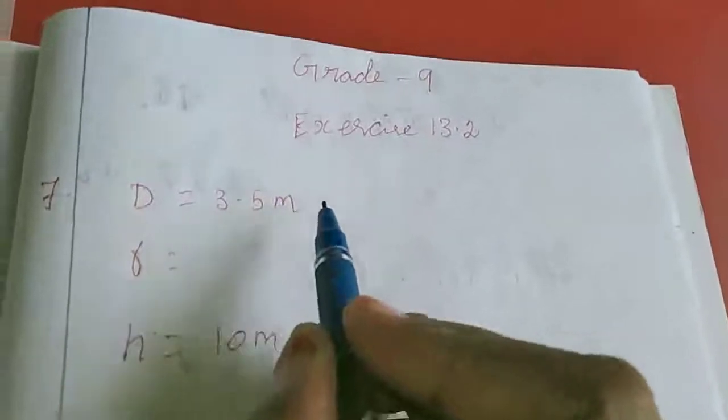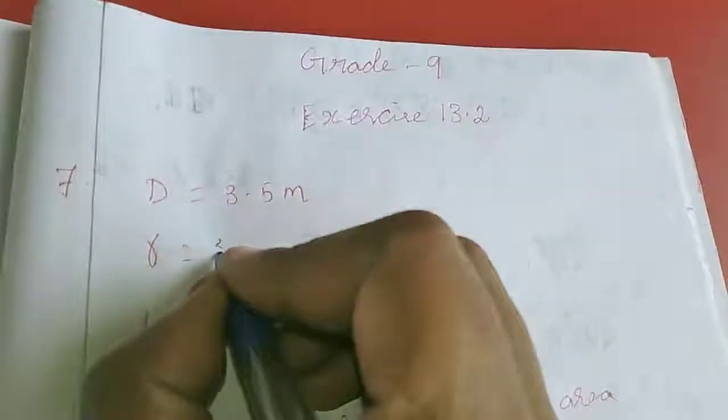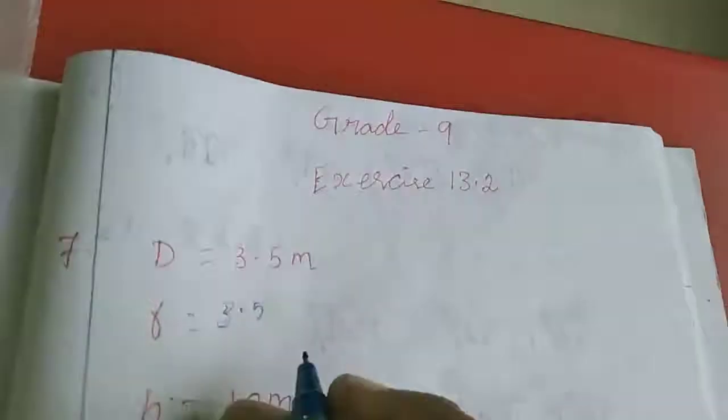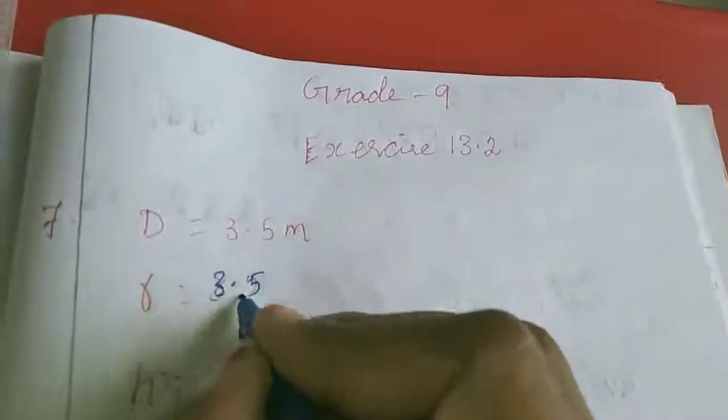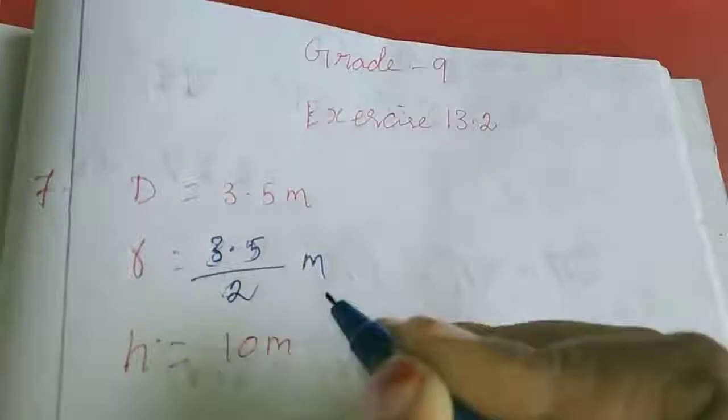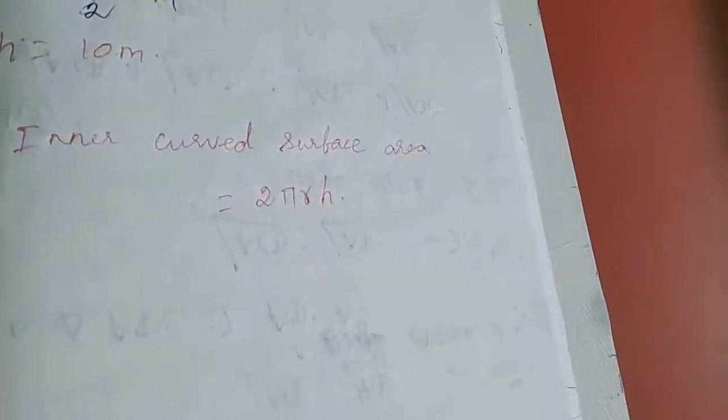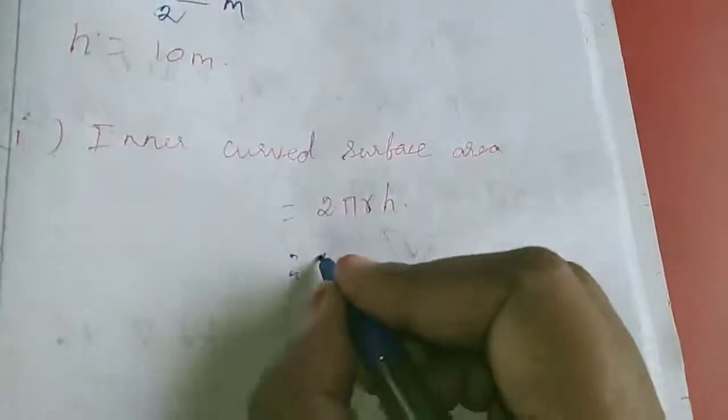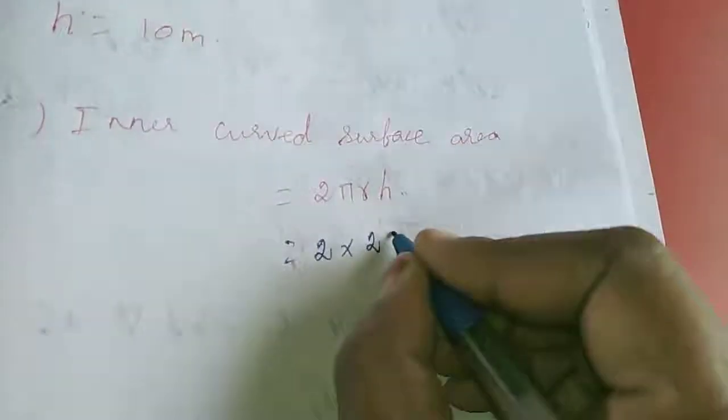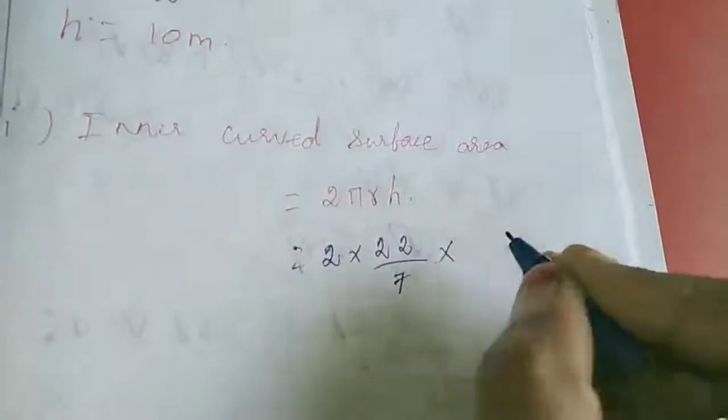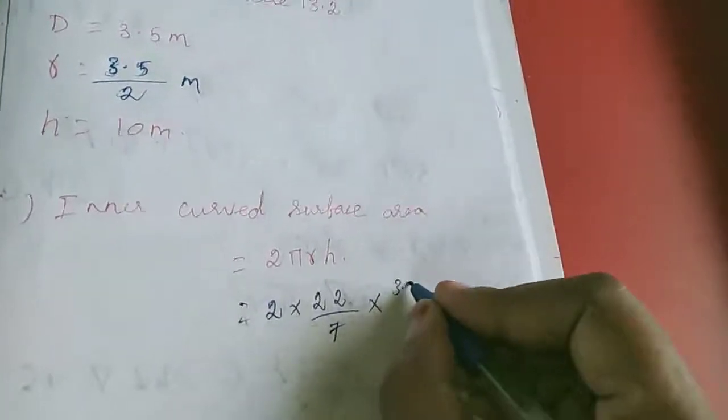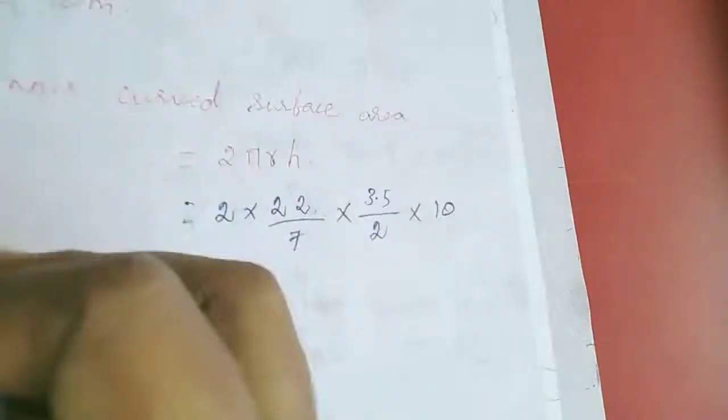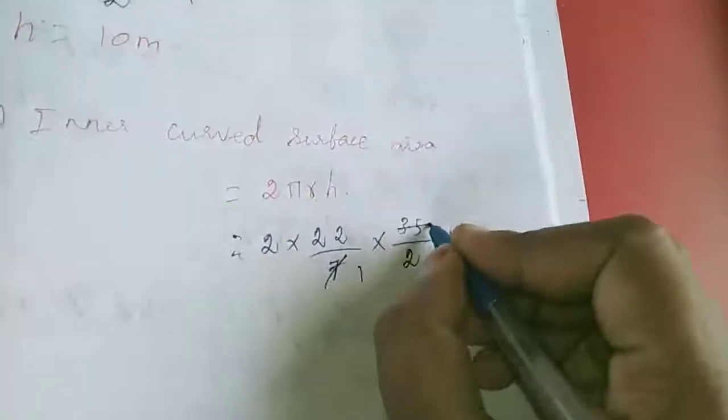D is 3.5 meter diameter, so radius R is 3.5 divided by 2 meter. Height is 10 meter. We are asking the inner curved surface area, so the formula is 2πRH. 2 into π, 22 by 7, into R 3.5 by 2, for H 10. Now I am cancelling.